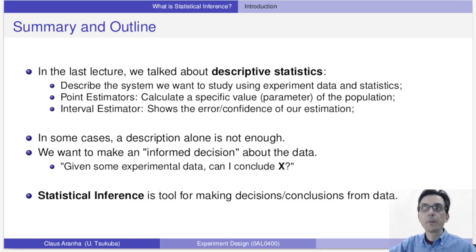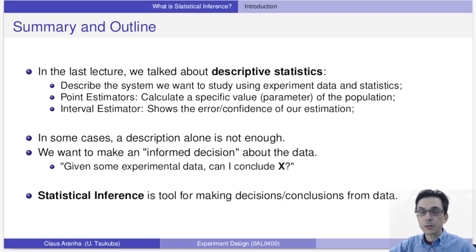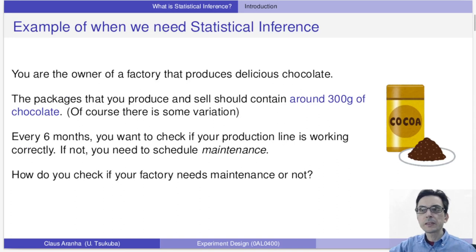However, what I cannot do with the confidence interval and other descriptive statistics — at least not directly — is to make more categorical affirmations. For example, I should not purely use a confidence interval to say program A is faster than program B. That's not what the confidence interval was made for. So when I want to say if program A is faster than program B, one very important tool is statistical inference.